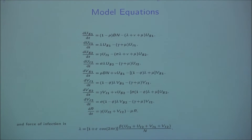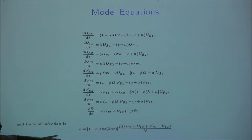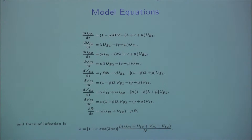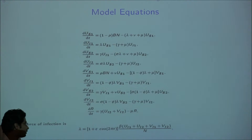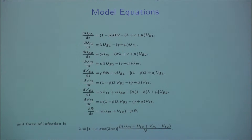Finally, to make my model account for seasonality — since dengue has seasonality due to seasonal variation in mosquito abundance — we want to have that seasonal effect. So we make our force of infection periodic: we multiply the force of infection by (1 + epsilon * cos(2*pi*t)) to make it periodic. And these are the equations for my model.